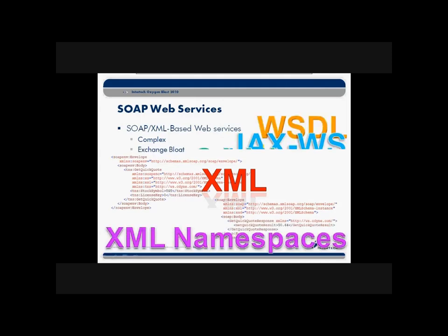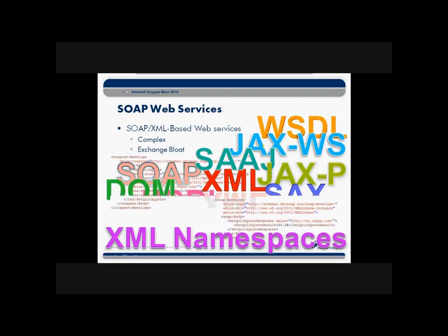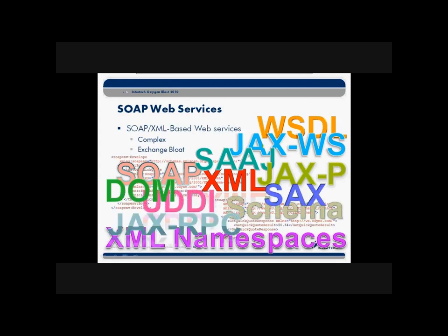SOAP-based Web Services, at least most people find, are a bit complex and tend to lead to what we call exchange bloat. From a Java perspective, how are they complex? I've flashed up on the screen the alphabet soup, which is all of the APIs and technologies one typically has to know and understand before building SOAP-based Web Services in Java. When you look at that list, it's a pretty extensive list — a pretty steep learning curve. Something like XML may not be that bad, but even XML namespaces tends to confuse people pretty quickly.